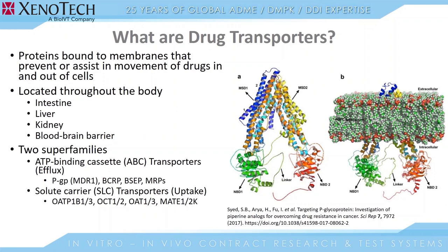What are drug transporters? Drug transporters are membrane-bound proteins that prevent or assist in the movement of drugs into or out of cells. Drug transporters are found in all cells throughout the body. However, when we consider DDI for drug transporters, we're mainly concerned with several different tissue types, including the intestine, the liver, the kidney, and the blood-brain barrier.